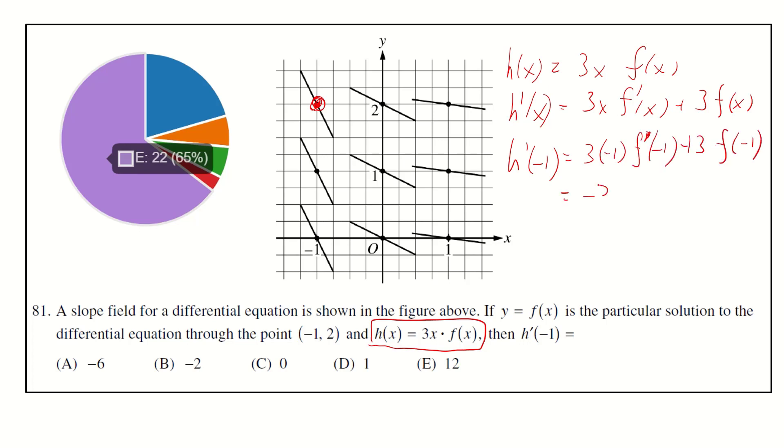So this is negative 3 f prime negative one, meaning the gradient at this point negative one, two. You can check it equals negative 2. This is 3 f of negative one equals 2. So the answer is E.